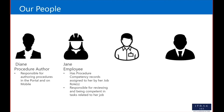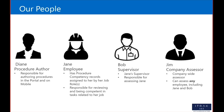Jane is the employee. She has procedure competency records assigned to her by a job role. Job roles allow a way to group together procedures that have a common factor for employees — this could be site-specific, for example. Employees are added to the job role and receive an outstanding procedure competency record for each procedure. Then we have Bob, Jane's supervisor, responsible for assessing Jane. And Jim is our company assessor — he has permission to assess any employee, including Jane and Bob.